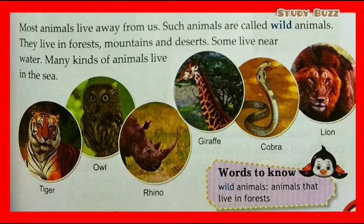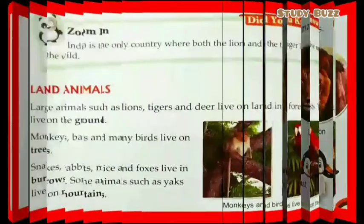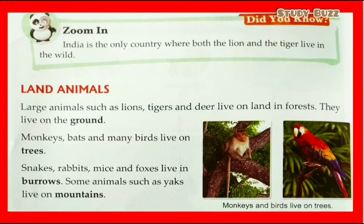Most animals live away from us. Such animals are called wild animals. They live in forests, mountains, and deserts. Some live near water. Many kinds of animals live in the sea. You can see different types of animals here: tiger, owl, rhino, giraffe, cobra, and lion. Did you know India is the only country where both the lion and the tiger live in the wild?